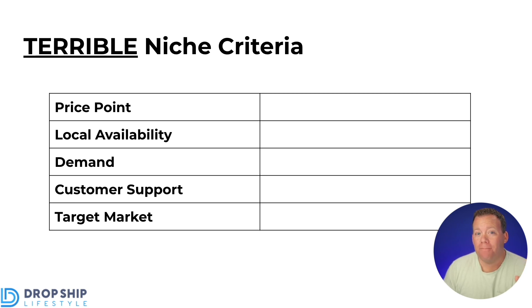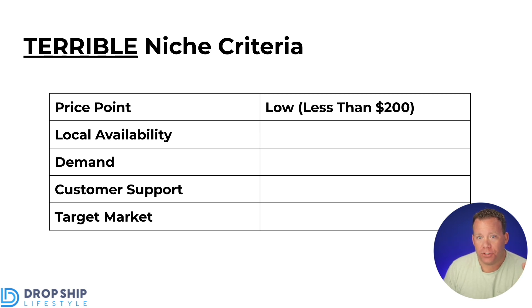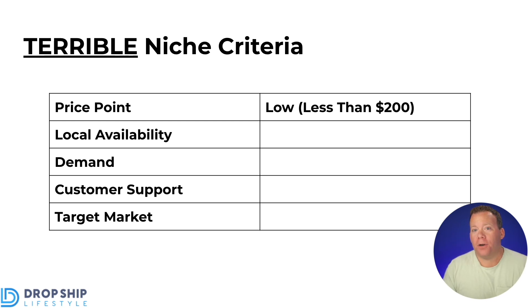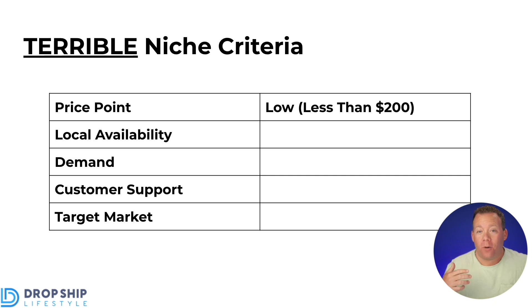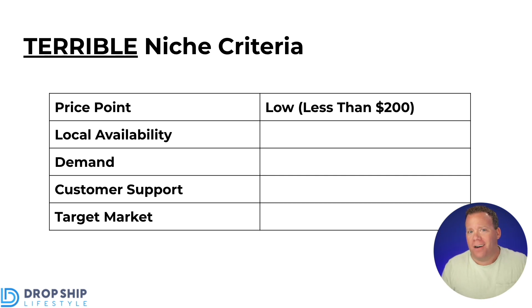The first thing you want to look at is price point — meaning what should be the average price for products in this niche. The lower the better. Anything less than $200 should be okay, but if you really want to lose more money, go even lower — maybe $20, $10. If you can get a five dollar product, that would be a great way to lose money. Maybe even do free-plus-shipping — you'll lose a ton.